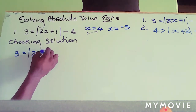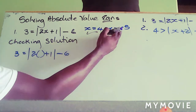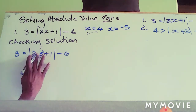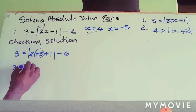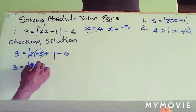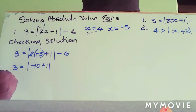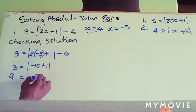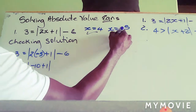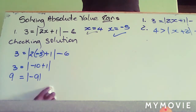Now checking x equals negative five: three is equal to the absolute value of two x plus one, minus six, substituting negative five for x. We add six to both sides to isolate the absolute value, giving nine equals the absolute value of two times negative five plus one, which is negative ten plus one, equaling negative nine. The absolute value of negative nine is nine, so both solutions are confirmed. Thank you very much for watching.